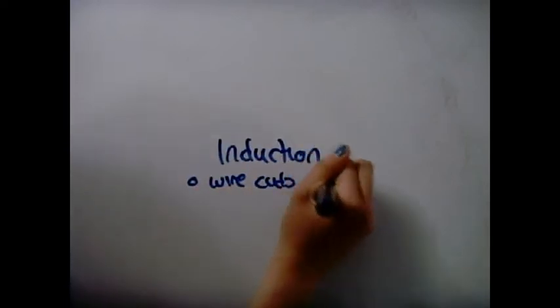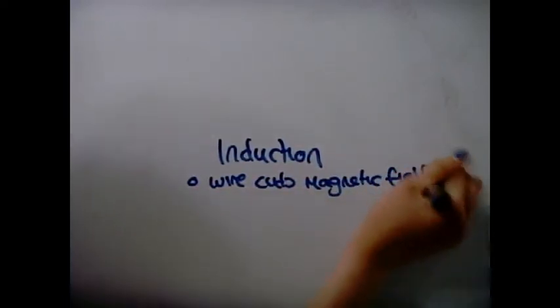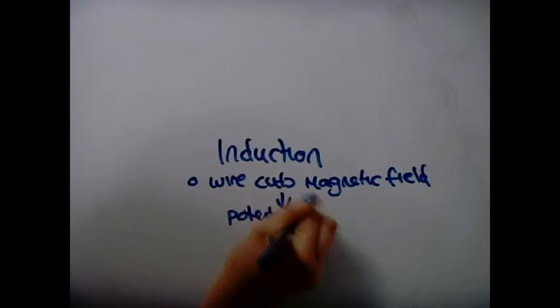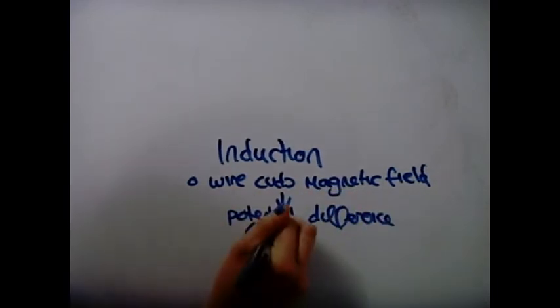Induction: When a wire cuts magnetic field lines, a potential voltage and current is produced, but the current is only produced if it is a complete circuit.